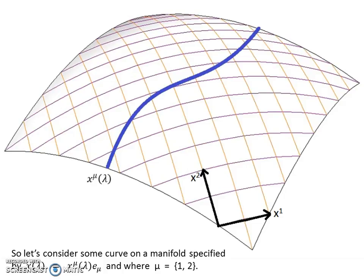Here's our manifold. Here's some curve on that manifold specified by x^μ of lambda. Lambda is a parameterization variable. It could be anything - proper time or some other affine variable. x^μ of lambda is the curve.